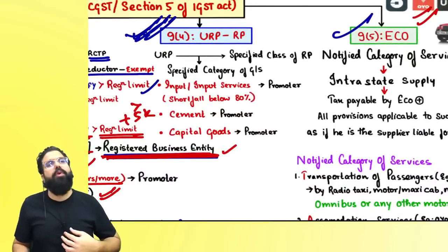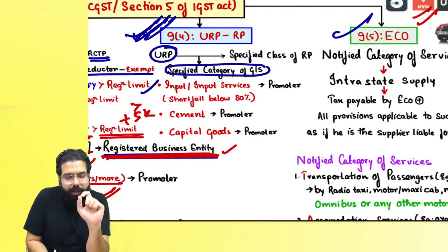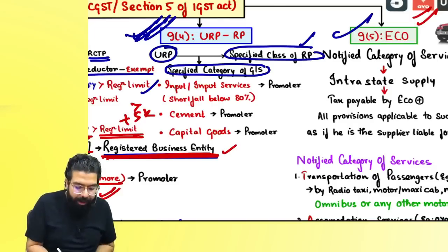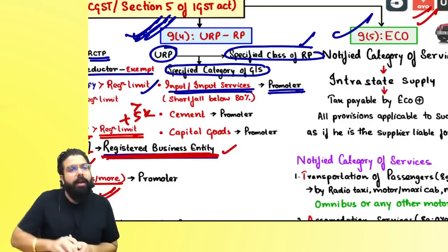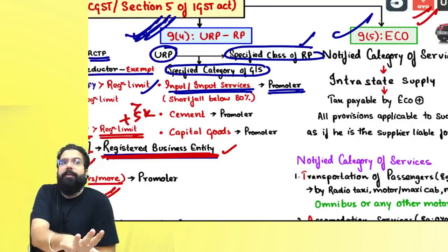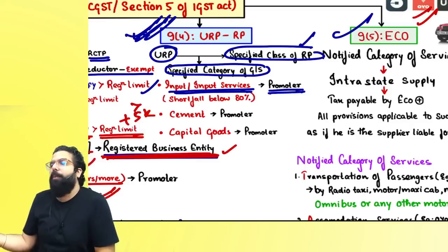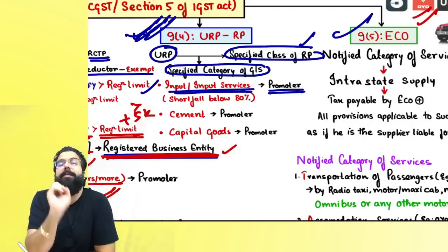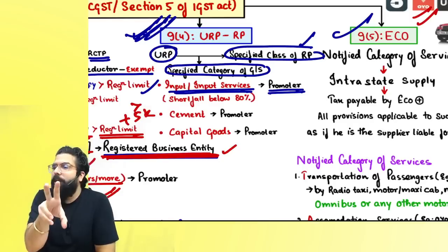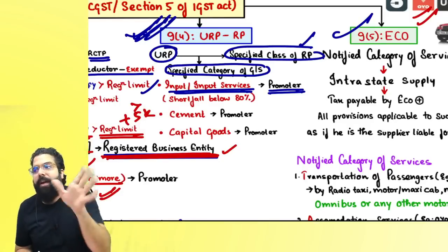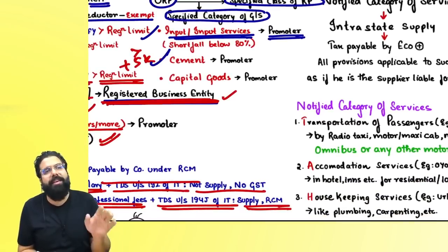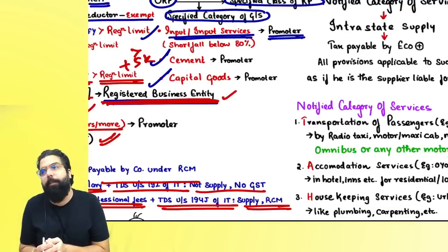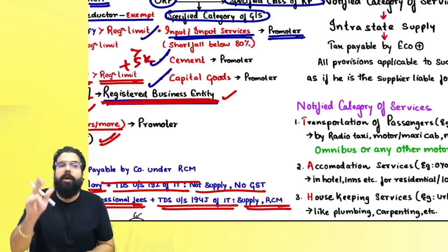Section 9(4): if any unregistered person supplies a specified category of goods or services to a specified registered person, the registered person pays GST under RCM. Specifically for promoters: if input and input services are supplied to a promoter by an unregistered person, and the promoter has bought 80% or more from registered persons, no RCM. But if less than 80% was bought from registered persons — for example, bought only 7 lakhs out of 10 lakhs from GST-registered suppliers — the shortfall of 1 lakh is subject to GST at 18% under RCM. Cement bought from an unregistered person: promoter always pays RCM. Capital goods bought by a promoter from an unregistered person: GST under RCM.